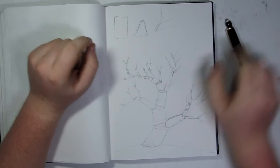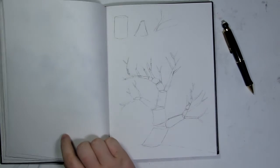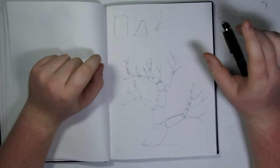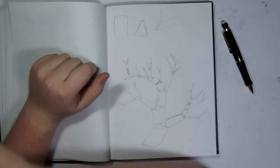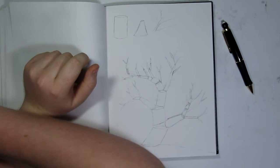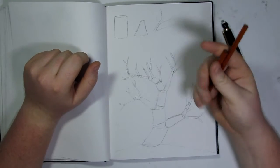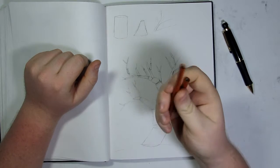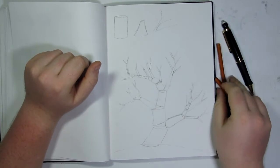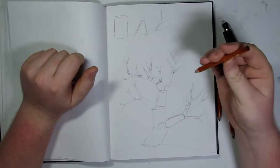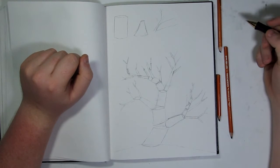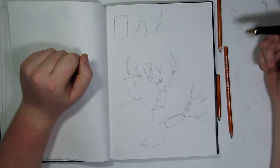For this next part we're going to be shading it in and making it more volumetric. For this I plan on using some charcoal - I got some medium, some hard, and some extra soft, so that'll probably be all right.